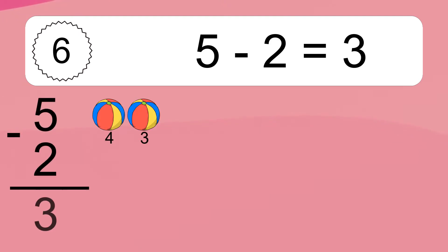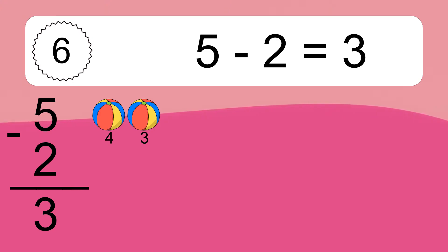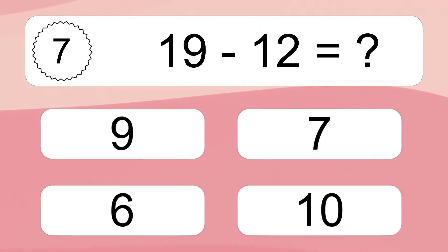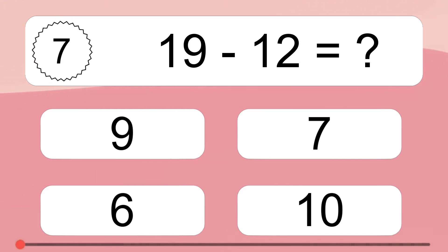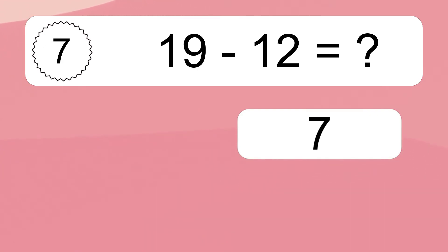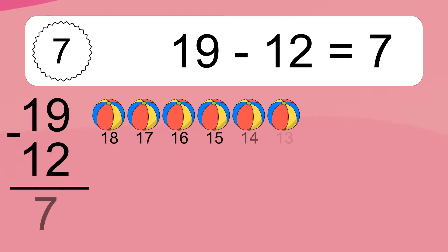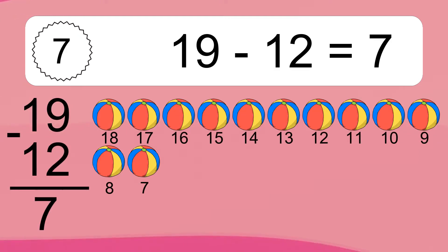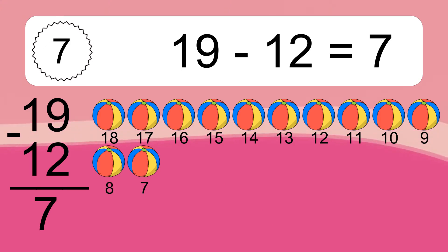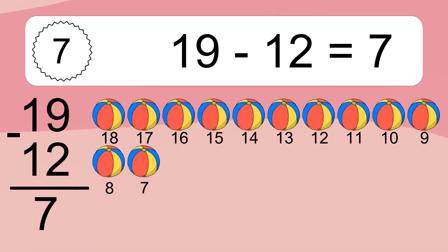5 minus 2 equals 3. Let's count it: 4, 3. 19 minus 12 equals what?